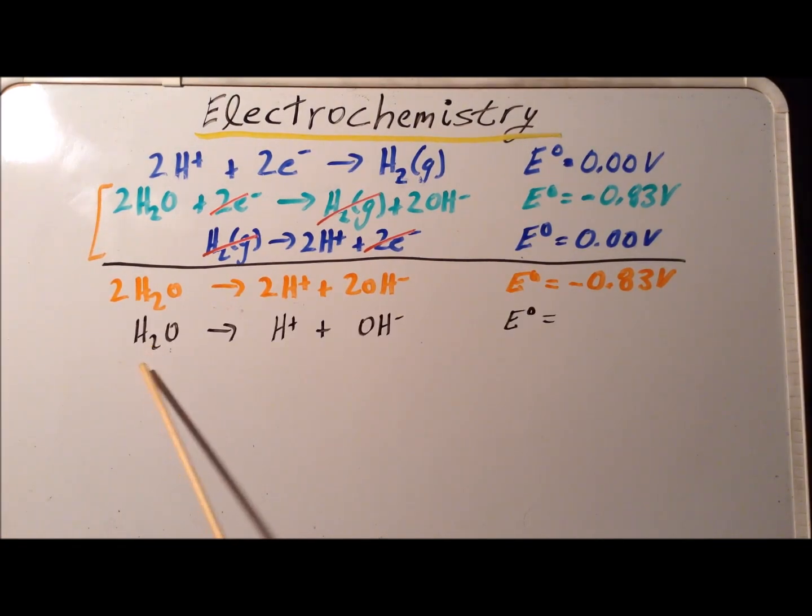So this is the reaction after we divided through by two. Now an important peculiarity of standard cell voltages is that if we divide through a reaction by a constant, the voltage does not change. So this is a big difference compared to other thermodynamic quantities such as the Gibbs free energy, the enthalpy, or the entropy. So here, even though we divided the reaction by two, the standard cell voltage stays exactly the same at minus 0.83 volts.